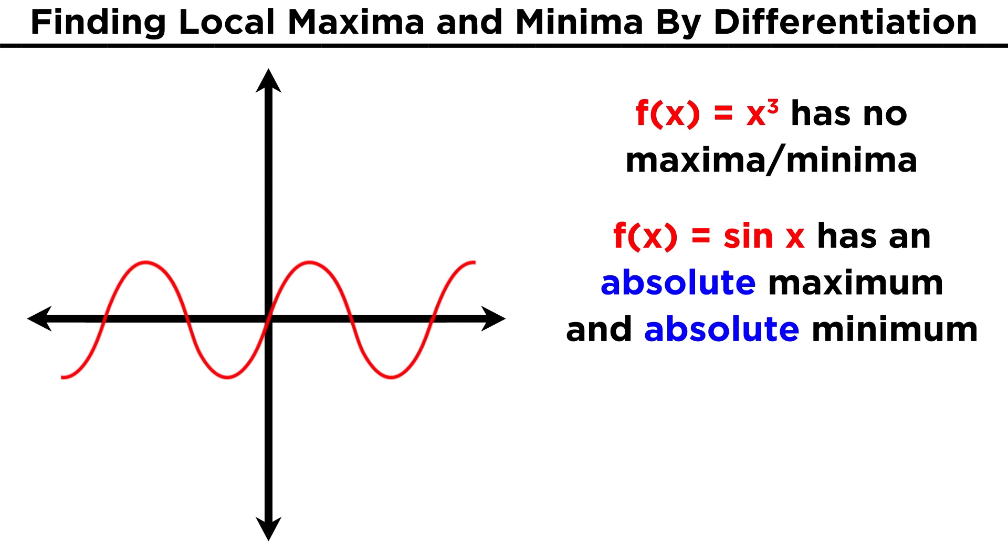Some functions have absolute maxima and minima. This would be something like sine of x. This function will never be greater than one, which is its value at any input that is half pi, plus or minus any multiple of two pi. Likewise, it will never be less than negative one, which is its value at any of these inputs. So these are absolute maxima and minima.